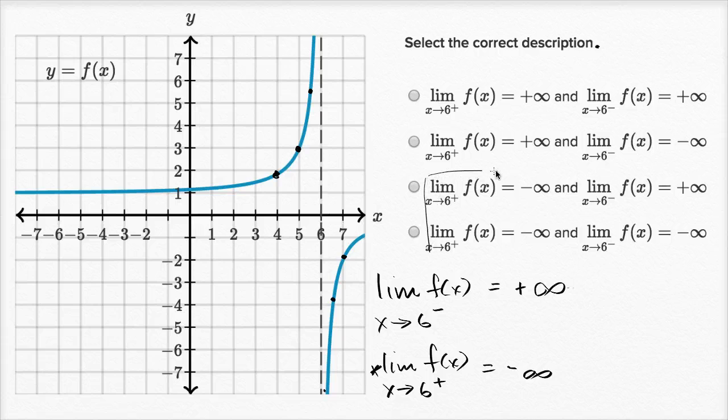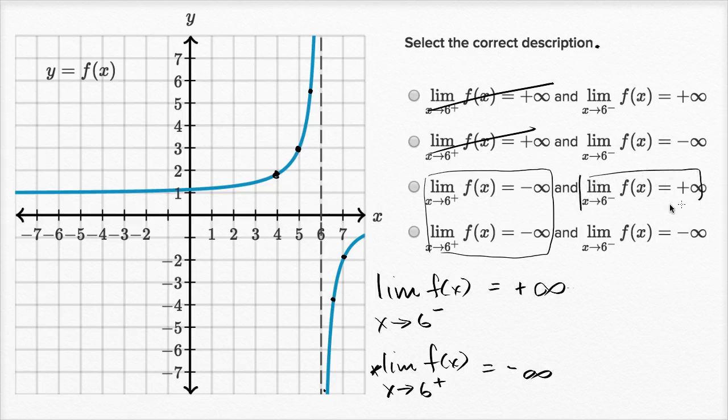So that is these two choices. So we're going to rule out those two choices. And then as we approach six from the left-hand side, we see that we go to positive infinity. And that is this choice right over here. So we rule out that one, and that is what we will pick.